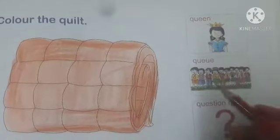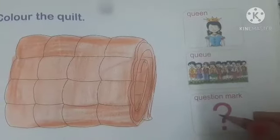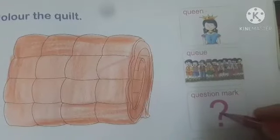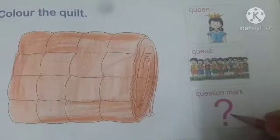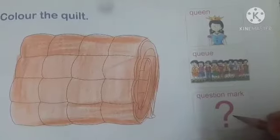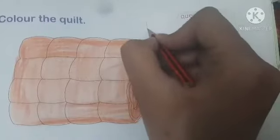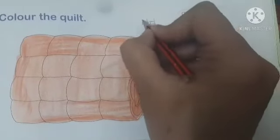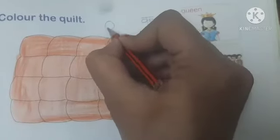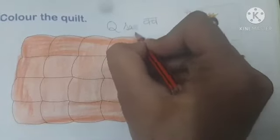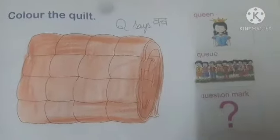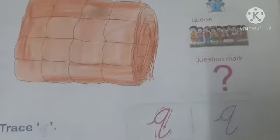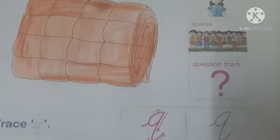Students, when you speak these words — quilt, queen, caution — which sound comes first in your mouth? In 'quilt,' in 'queen,' the first sound in your mouth is the sound of letter Q. You see it is 'kwak' — Q!